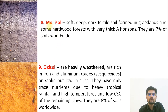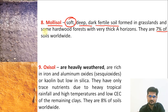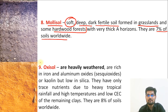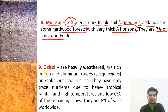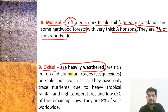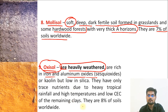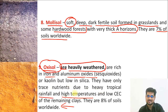The eighth order is Mollisol — deep, dark, fertile soft soils. They constitute about 7% of soils worldwide and are found in grasslands and small hardwood forests. They have a very thick A horizon. The ninth order is Oxisol — heavily weathered soils with lots of iron and aluminium oxides. They constitute about 8% of world soils and are found in heavy tropical rainfall areas with high temperatures.